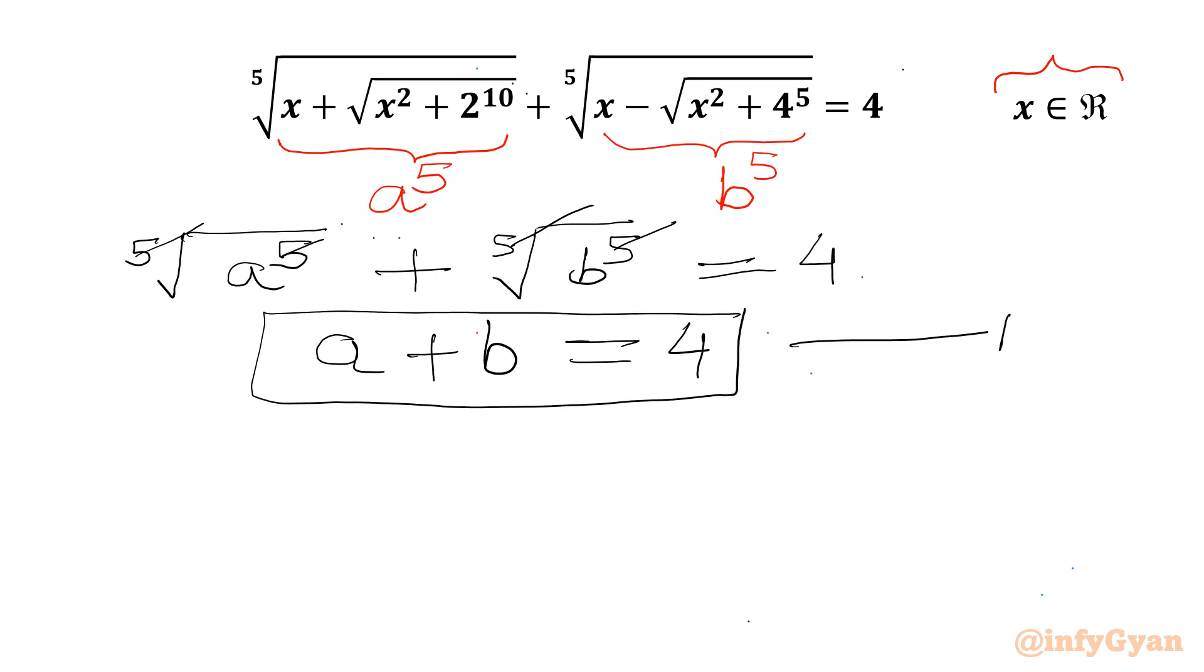Let's say equation number 1. Now I will write a power 5 value. This is equal to x plus square root of x square plus 2 power 10. It is 1024. 2 power 10 is equal to 4 power 5 is equal to 1024.